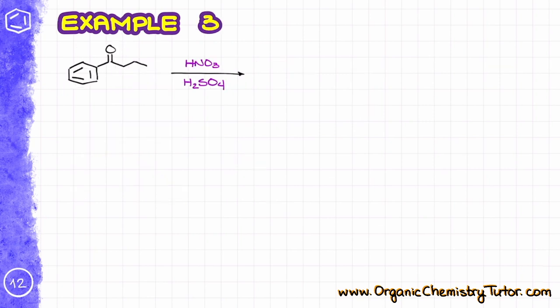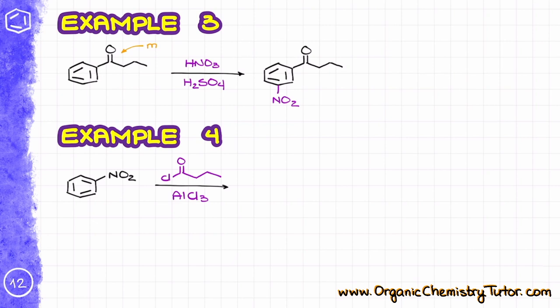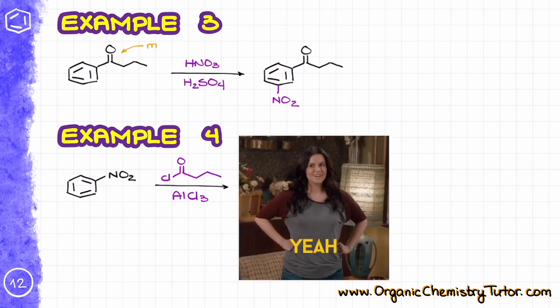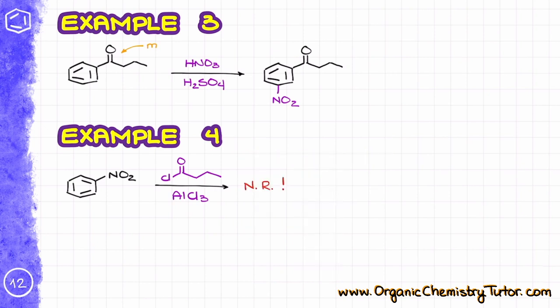Here is another example. Since the ketone functional group — this carbonyl — is a moderately deactivating group and a meta-director, we would expect the final product to be the meta-isomer. But if we switch the groups and attempt a Friedel-Crafts acylation reaction, we'll get nothing, as Friedel-Crafts acylation does not work for aromatic rings containing moderately or strongly deactivating groups.